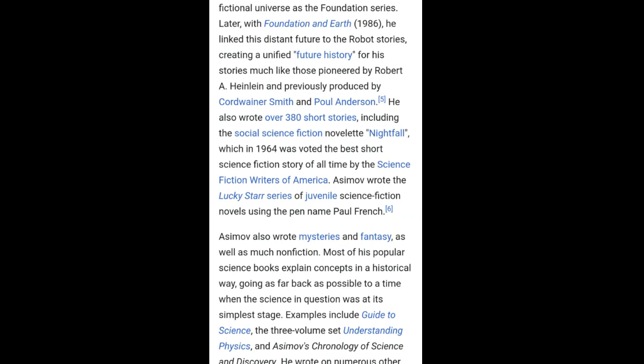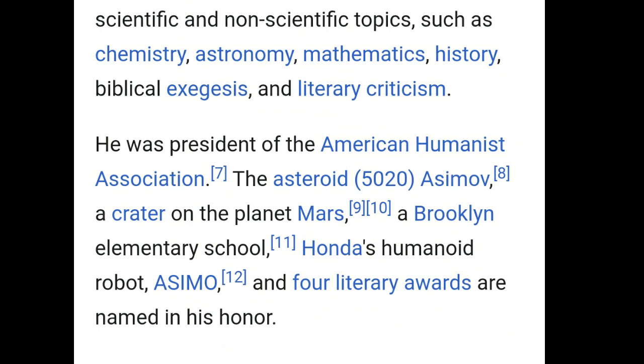Asimov's most famous work is The Foundation Series, the first three books of which won the one-time Hugo Award for best all-time series in 1966. His other major series are Galactic Empire series and The Robot series. The Galactic Empire novels are set in the much earlier history of the same fictional universe as the Foundation Series. Later with Foundation and Earth 1986, he linked this distant future to the robot series creating a unified future history for his stories, much like those pioneered by Robert A. Heinlein and previously produced by Cordwainer Smith and Poul Anderson. He also wrote over 380 short stories including the Social Science Fiction Novelette Nightfall, which in 1964 was voted the best short science fiction story of all time by Science Fiction Writers of America. Asimov wrote the Lucky Starr series of juvenile science fiction novels using the pen name Paul French.